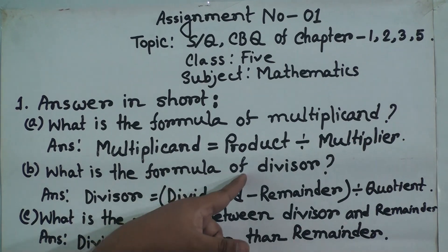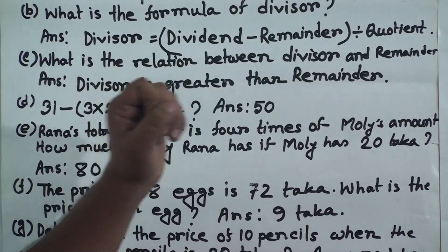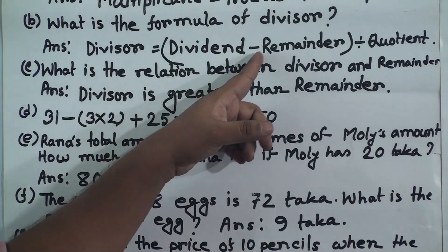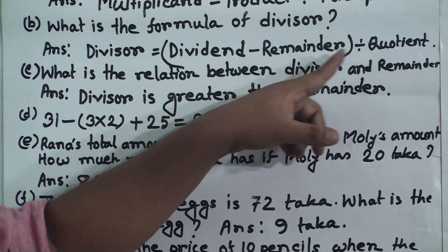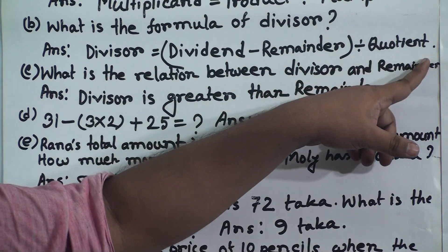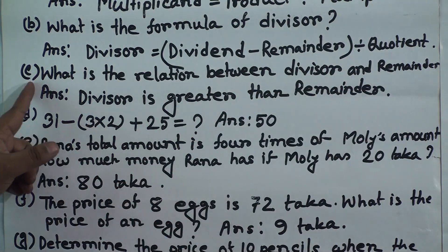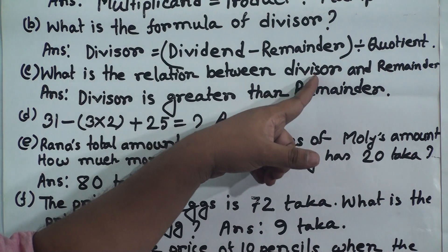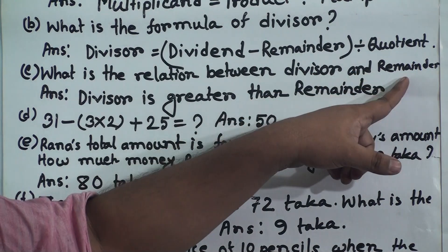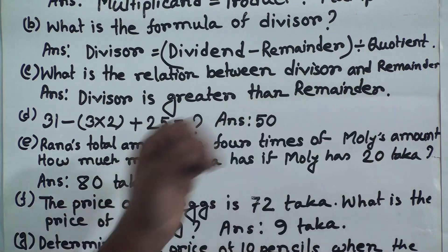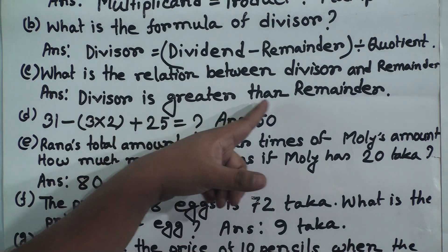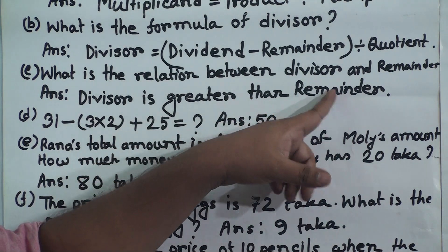The formula of divisor is: dividend minus remainder, divided by quotient. (c) What is the relation between divisor and remainder? The relation between divisor and remainder is: divisor is greater than remainder.